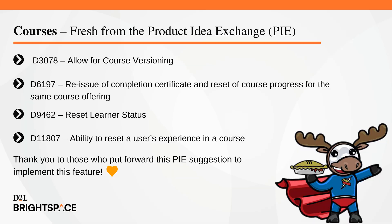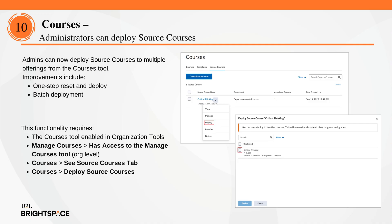This feature implements the following PI items: D-3078 allow for course versioning; D-6197 reissue of completion certificate and reset of course progress for the same course offering; D-9462 reset learner status; D-11807 ability to reset a user's experience in a course. Thank you to those who put forward these PI suggestions. Administrators can now deploy the contents of a source course to multiple inactive course offerings in one streamlined workflow. Using the courses tool, they can reset each target course and push content from a source course. This replaces the manual copy course components process, saving time, reducing errors, and ensuring content consistency at scale.